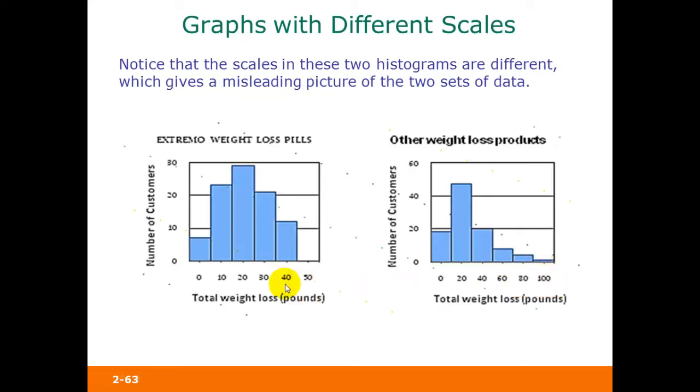The top weight loss for the extremo weight loss pills was somewhere between 35 and 45 pounds, while for other weight loss products it was somewhere between 90 and 110 pounds. That's a lot of difference.